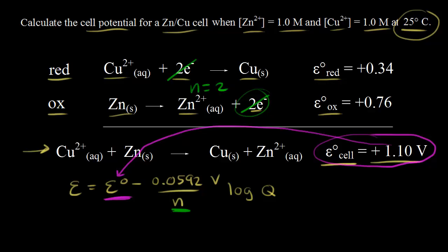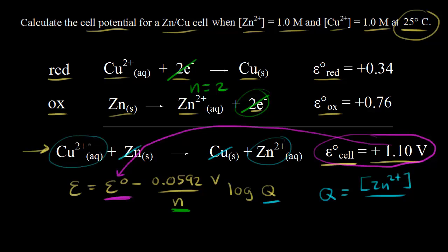Q is the reaction quotient. Q has the same form as K, but you're using non-equilibrium concentrations. To write Q, think about an equilibrium expression where you have your concentration of products over the concentration of your reactants, and you leave out pure solids. So we're going to leave out solid copper and have the concentration of zinc two-plus — our product — over the concentration of our reactant, leaving out solid zinc, giving us the concentration of copper two-plus. The concentration of zinc two-plus is one molar, and the concentration of copper two-plus is one molar.